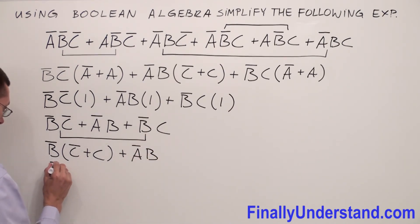C̄ plus C will equal one, plus ĀB̄. So B̄ times one is B̄.